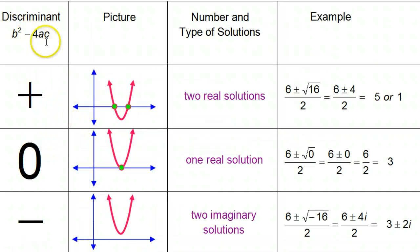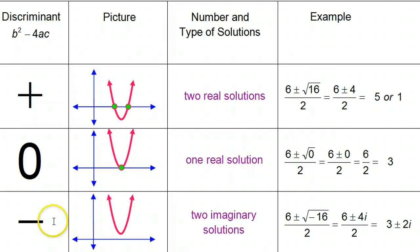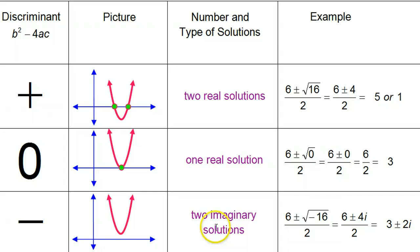It goes like this: if the discriminant is positive, there will be two real solutions. If the discriminant is zero, then there's just one x-intercept, so there's one real solution. If the discriminant is negative, that means there were no x-intercepts, no zeros, and in that case the only solutions will be imaginary — there will be two imaginary solutions.